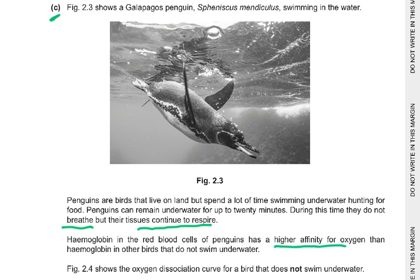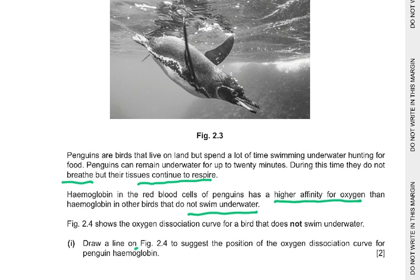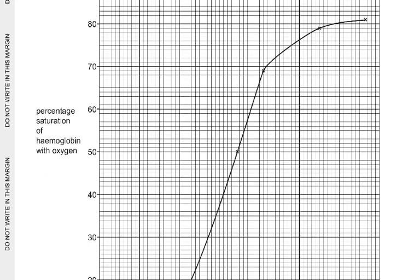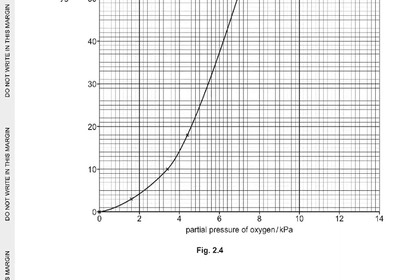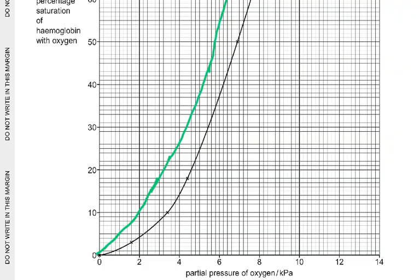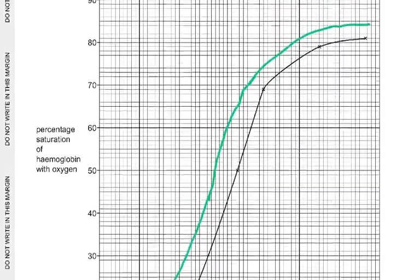Hemoglobin in penguin red blood cells has a higher affinity for oxygen than hemoglobin in other birds that do not swim underwater. Figure 2.4 shows the oxygen dissociation curve for a non-diving bird. Draw a line to suggest the position of the curve for penguin hemoglobin. The line must be drawn to the left, with a sigmoidal shape starting at zero, because penguin hemoglobin has a higher affinity for oxygen.